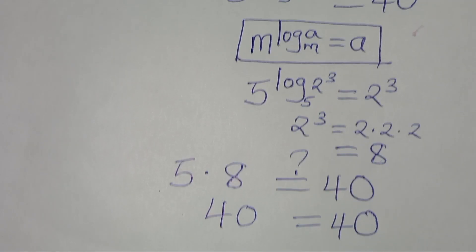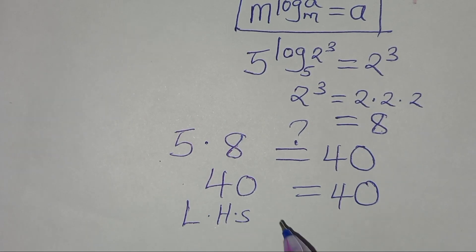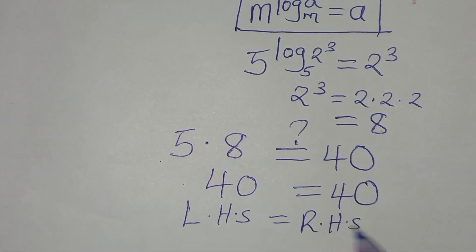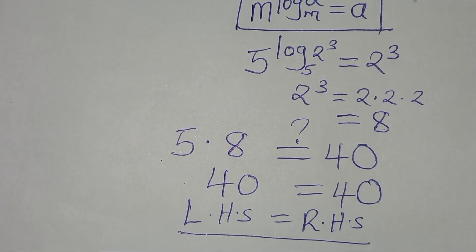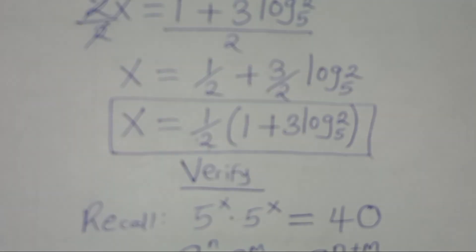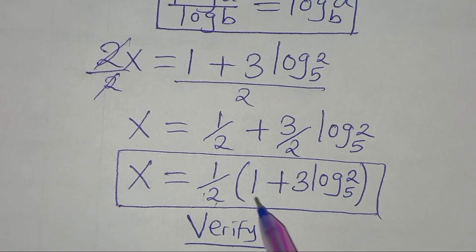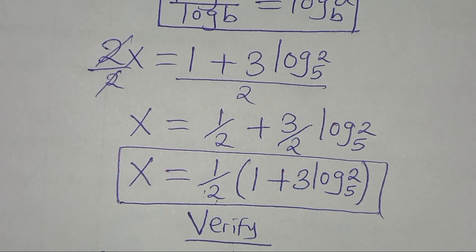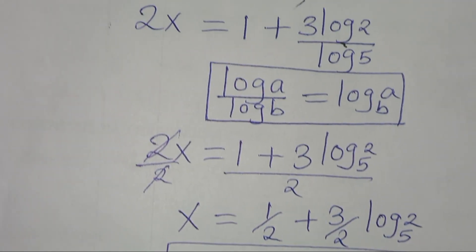The left-hand side equals the right-hand side, confirming that the value of x equal to one half times the quantity 1 plus 3 log base 5 of 2 satisfies the equation. Please like and subscribe to the channel.